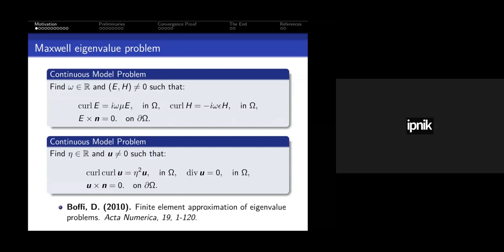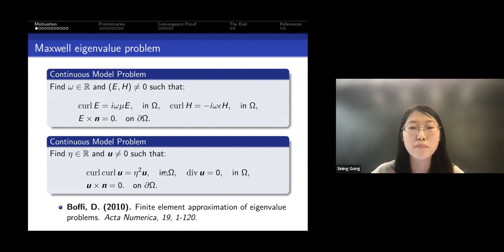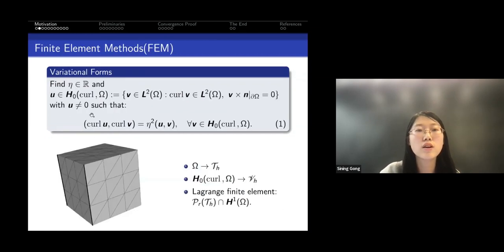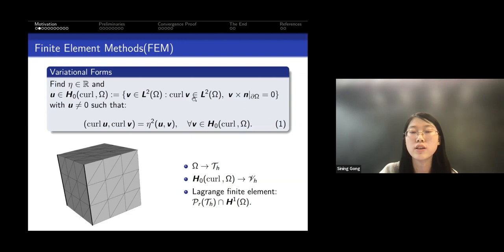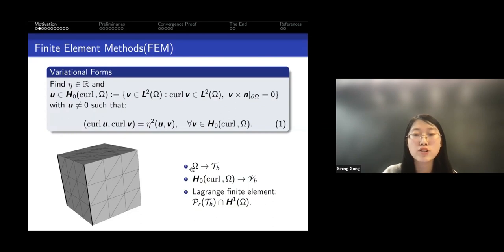Back to the Maxwell problems — the eta is the eigenvalue, and here is the Boffi paper I mentioned. This is the variational form, and H0-curl space is the space where V and curl V are both in L2 space and the tangential component vanishes on the boundary. We want to use finite element method on these problems, so we triangulate domain omega using triangles in 2D and tetrahedra in 3D.